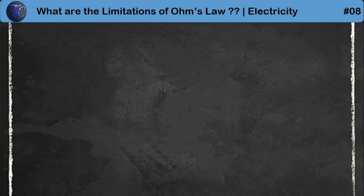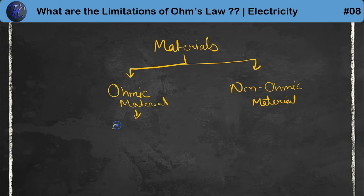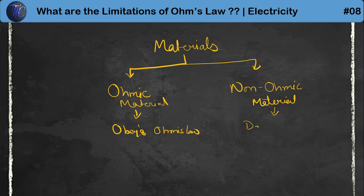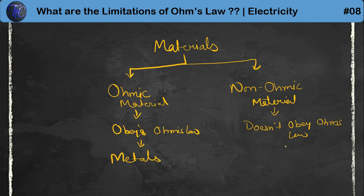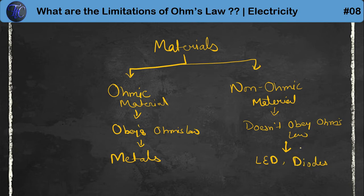Before seeing the limitations, we will first see what are ohmic and non-ohmic materials. Based on Ohm's Law, materials are classified into ohmic and non-ohmic materials. Ohmic materials are those which obey Ohm's Law, and non-ohmic materials are those which do not obey Ohm's Law. Examples of ohmic materials are metals, which always obey V = IR. Examples of non-ohmic materials are LED (light emitting diode), diodes, etc.